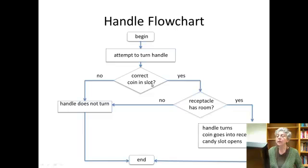If there is room, so there's a correct coin and the receptacle has room, then we want the handle to turn, the coin to go into the receptacle, and the candy slot to open. And if there's candy in the machine, it'll come out. And remember, this is one of our other use cases. Put in a coin, you turn the handle, there's no candy, nothing comes out. But the candy slot opens. And that's what we're concerned about here as far as our design.